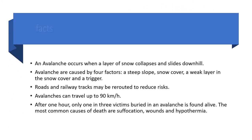Facts about avalanches: avalanches occur when a layer of snow collapses and slides downhill. They are caused by four factors — a steep slope, a snow cover, a weak layer in the snow cover, and a trigger. A trigger could be anything from high winds to humans pushing snow, or even loud sounds.